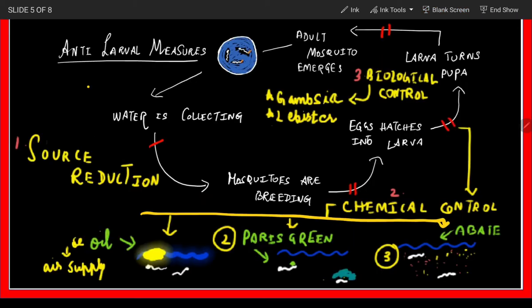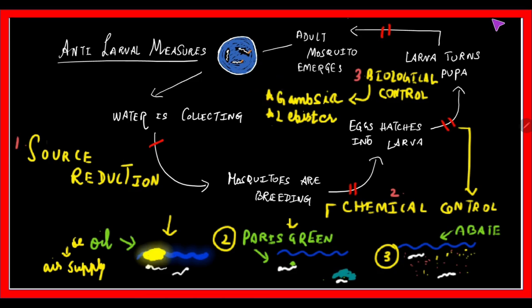Next is synthetic insecticides, especially abate and fenthion, which are most effective as larvicides. Abate is used at a concentration of not more than 1 ppm. Lastly, biological control uses fish such as Gambusia affinis and Lebistes reticulatus, also called Barbados minnows. These fishes feed on the larvae, thereby killing them.